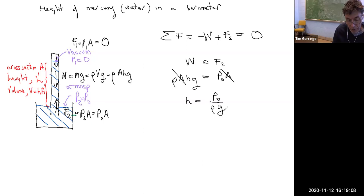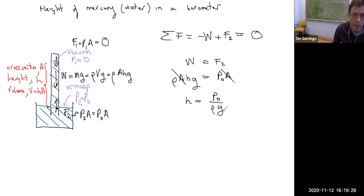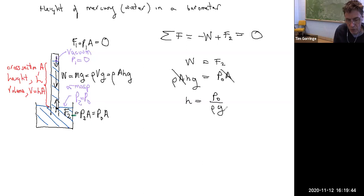This equation tells you the height of the column of liquid in the barometer in terms of the atmospheric pressure P0 and the density of the fluid. The density sits in the denominator, so a denser fluid like mercury gives a smaller height, while a less dense fluid like water gives a larger height. The acceleration of gravity also appears — without gravity the barometer wouldn't work, and on the moon the column would be much larger, while on Jupiter it would be considerably smaller.